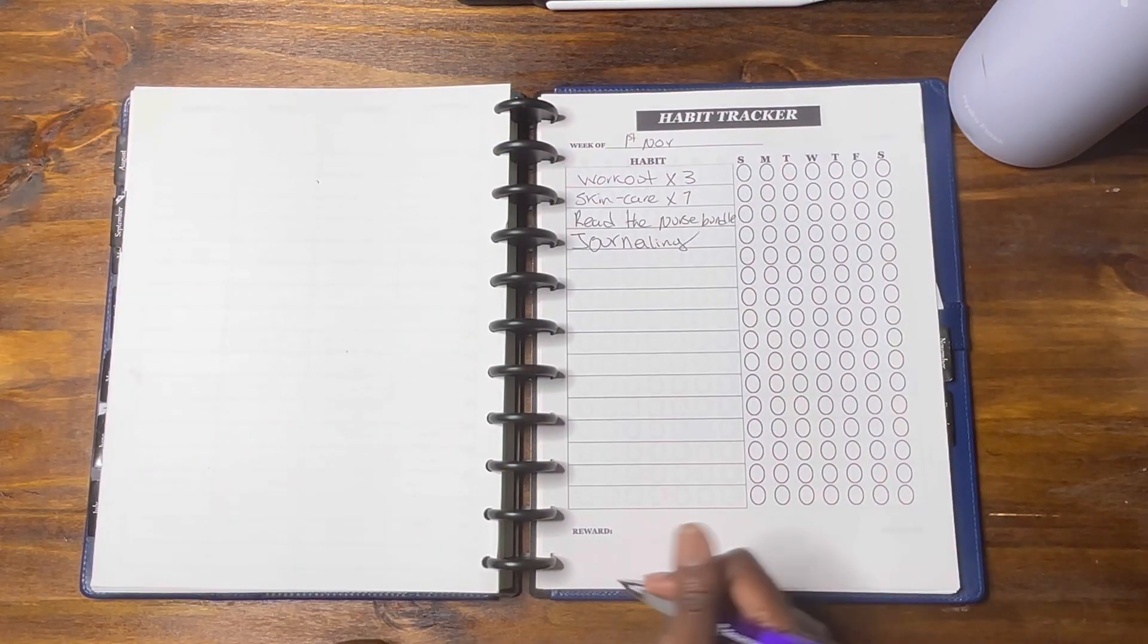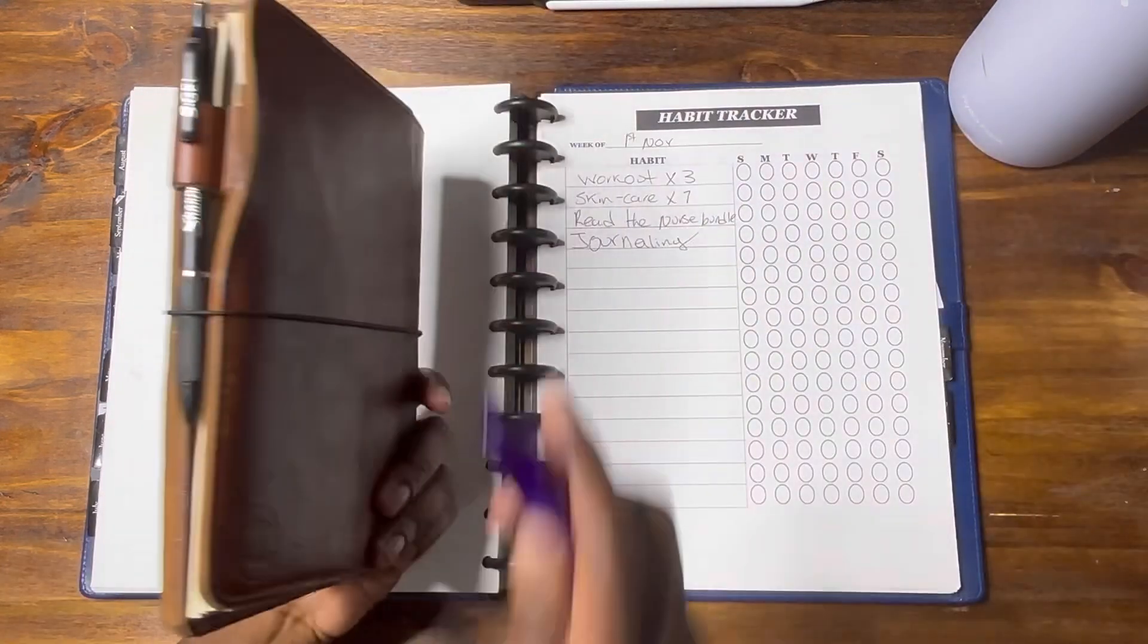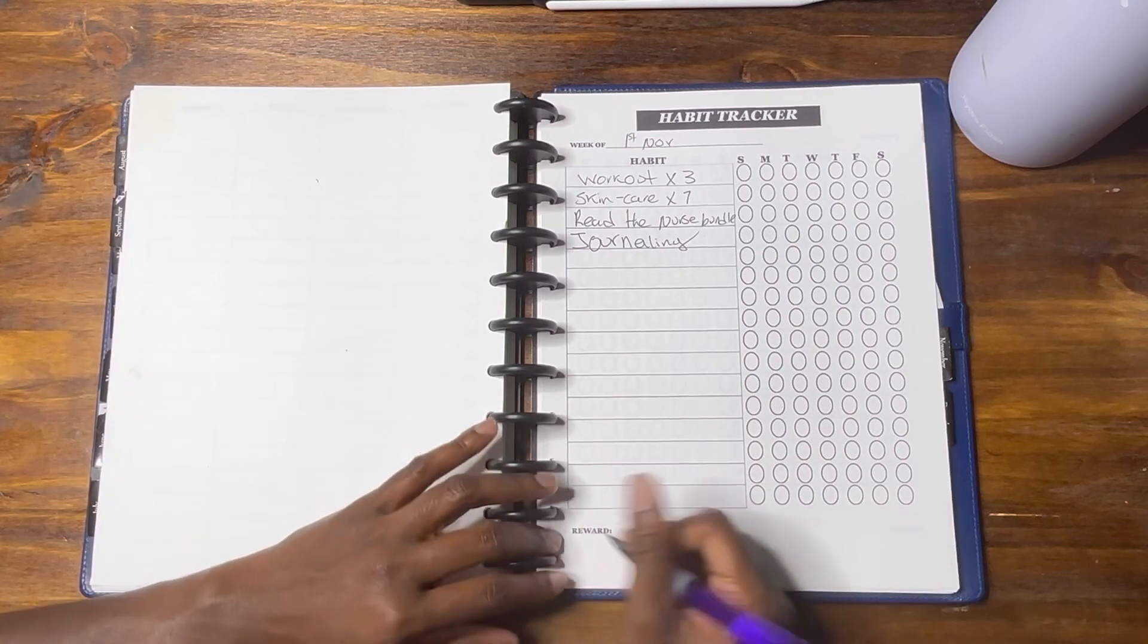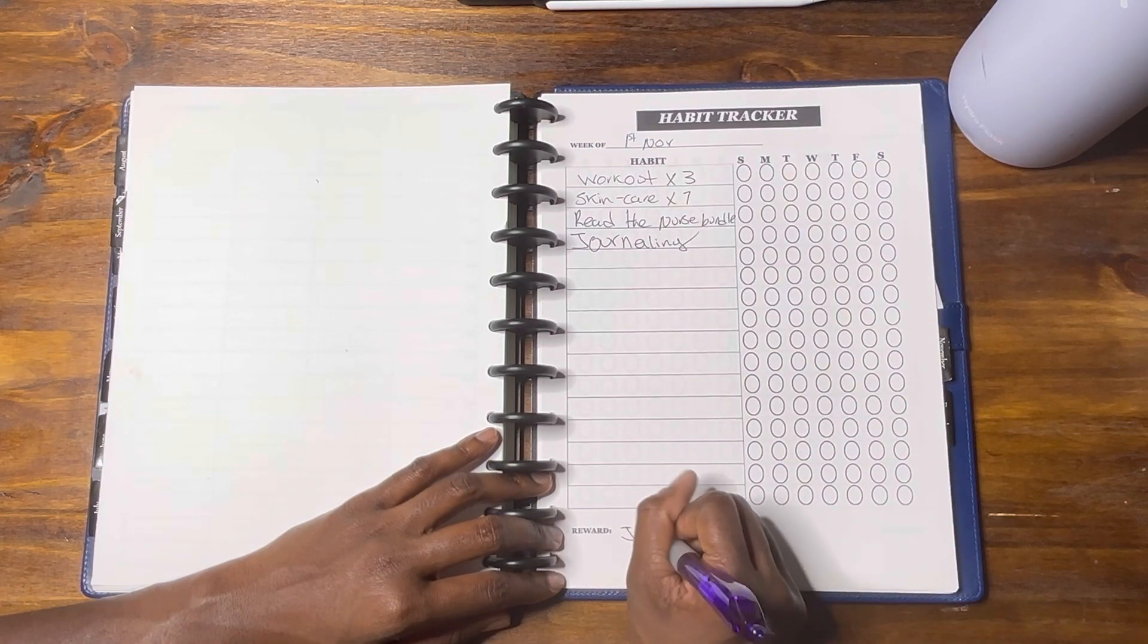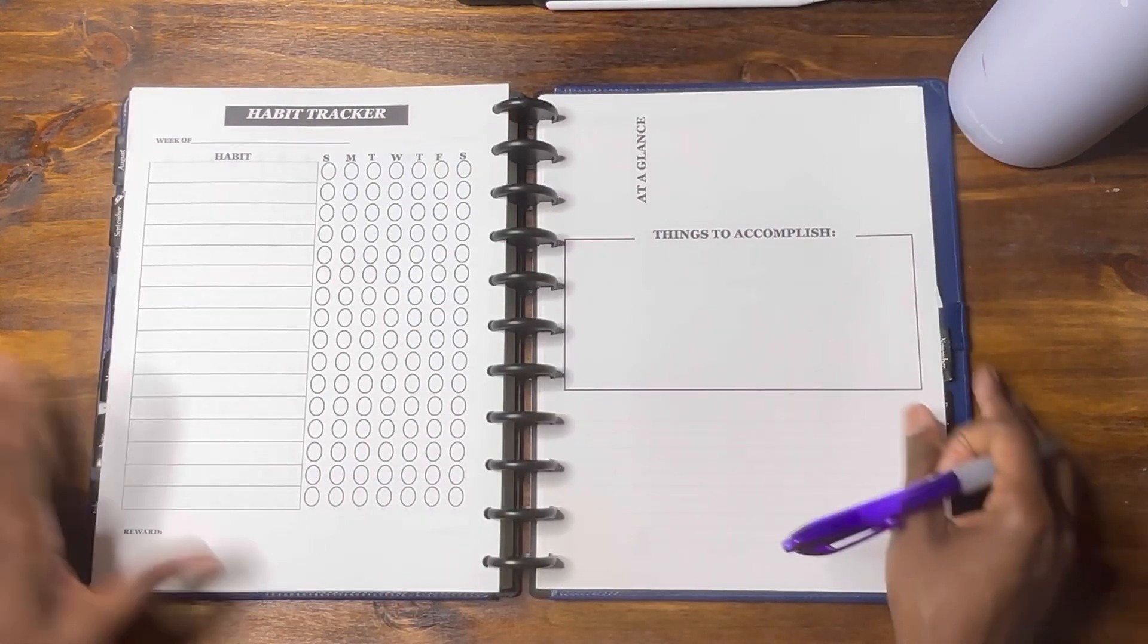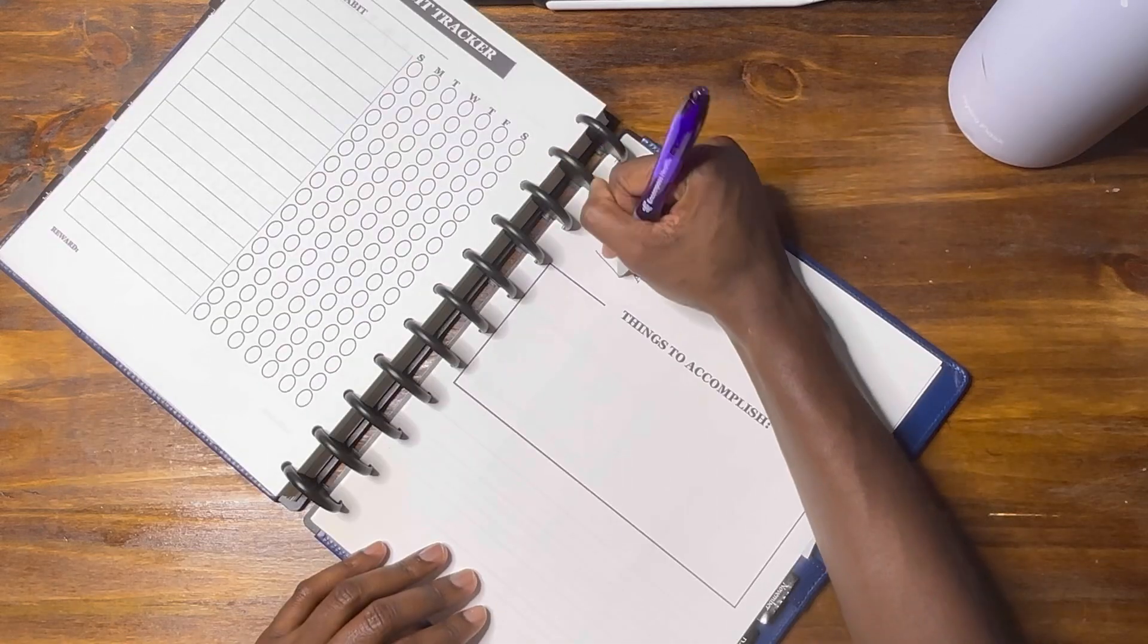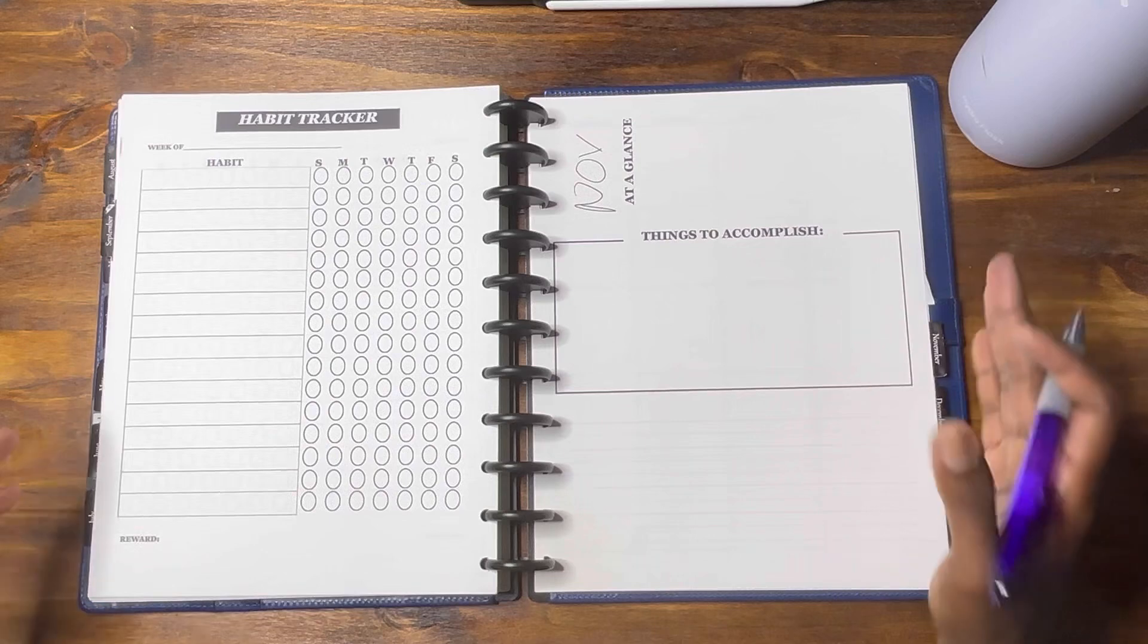For my reward, I'm going to get journaling supplies because right now all I have is my book and my pen. So I'm going to splurge and get journaling supplies. That would be my reward, probably like new pens or something. Now we're going to start for my month of November. I'm going to put November up there.